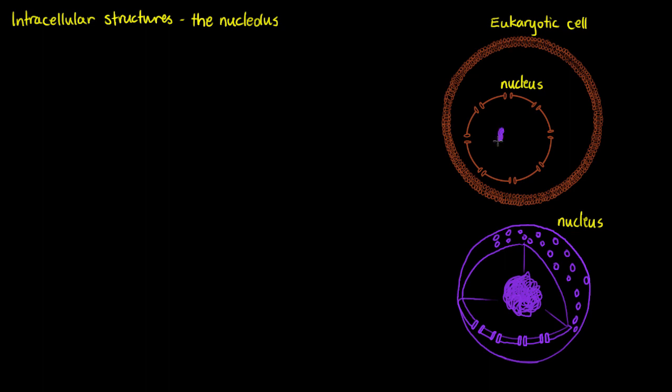Now our nucleolus is going to appear as a darkly staining region within the nucleus. When I say darkly staining, I just mean that if we were to perform a cell stain such as an H&E stain, we would see this area within the nucleus that appears darker than the rest. So let's just write down that our nucleolus is housed within the nucleus and it's not an organelle.